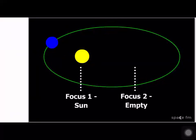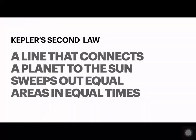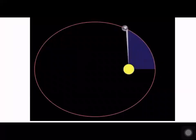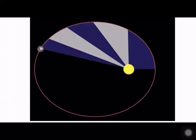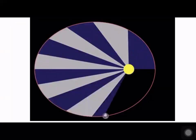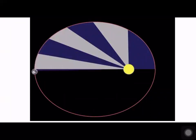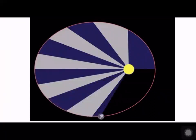Now for Kepler's second law: a line that connects a planet to the sun sweeps out equal areas in equal times. Looking at the diagram, you can see the planet moving around the sun, with all the shaded blue areas indicated.